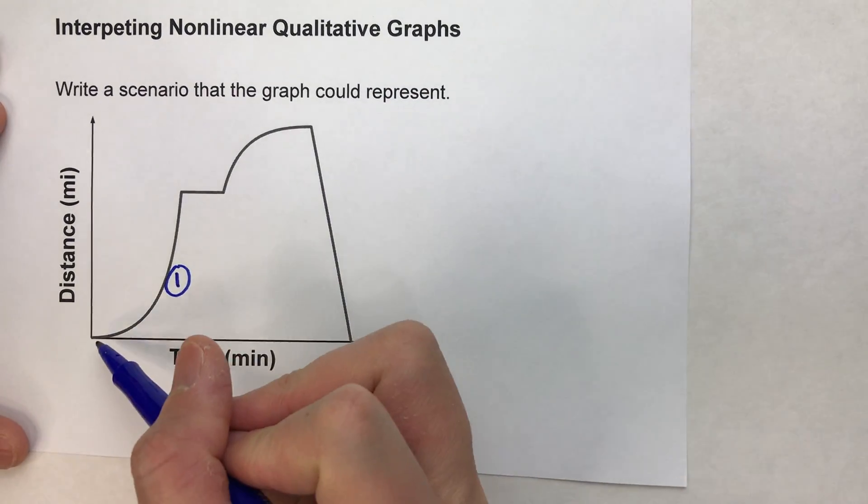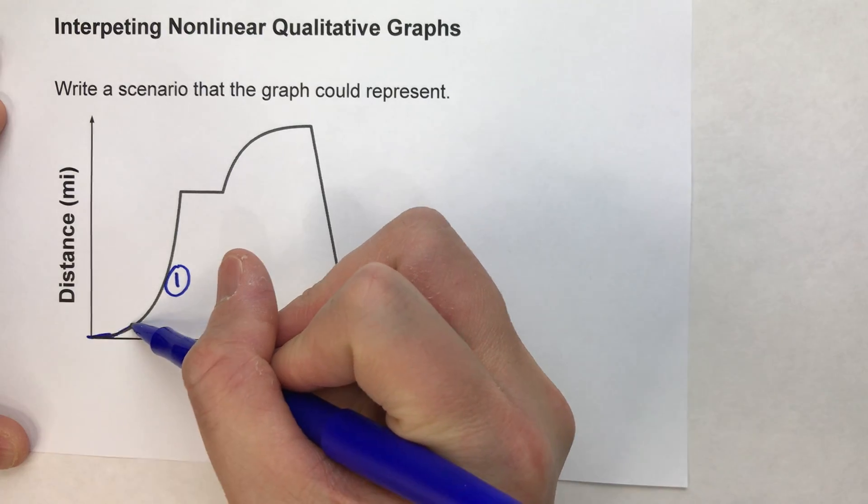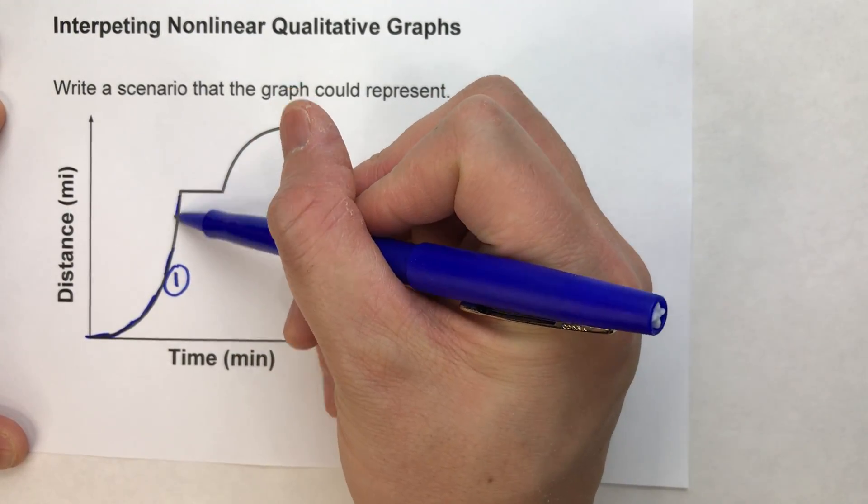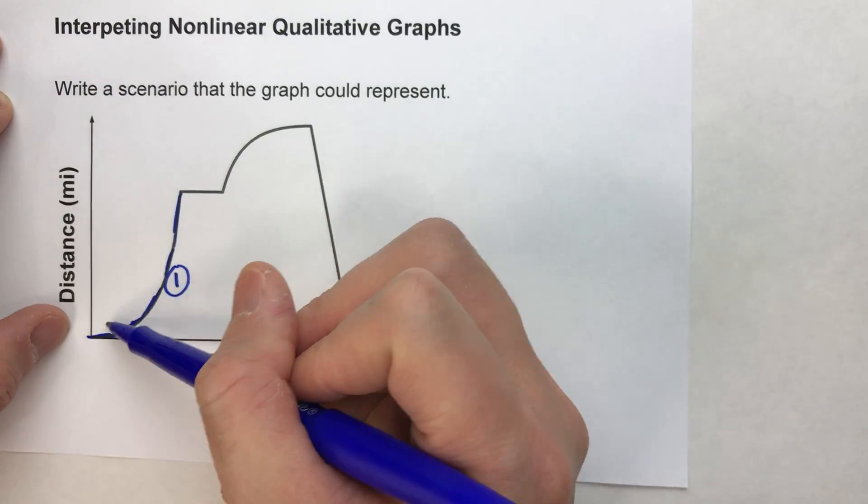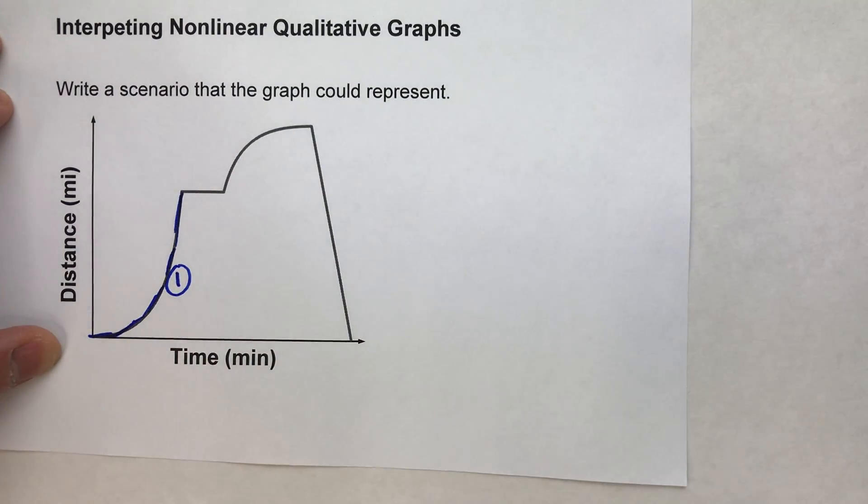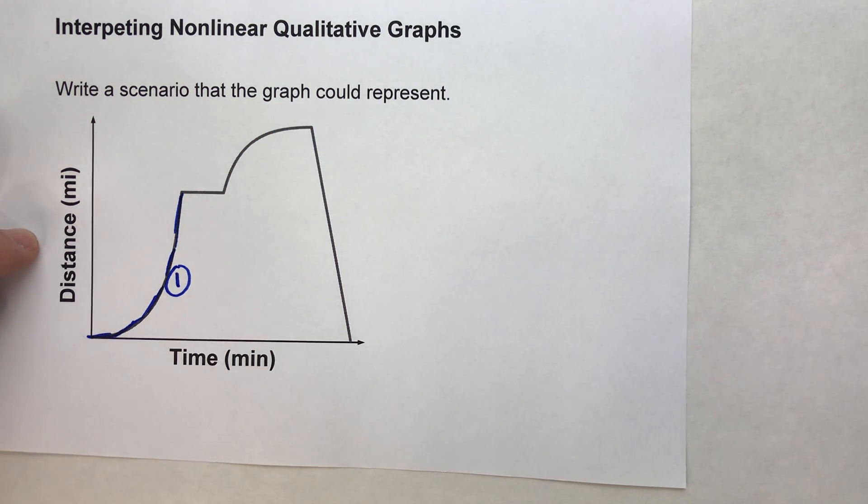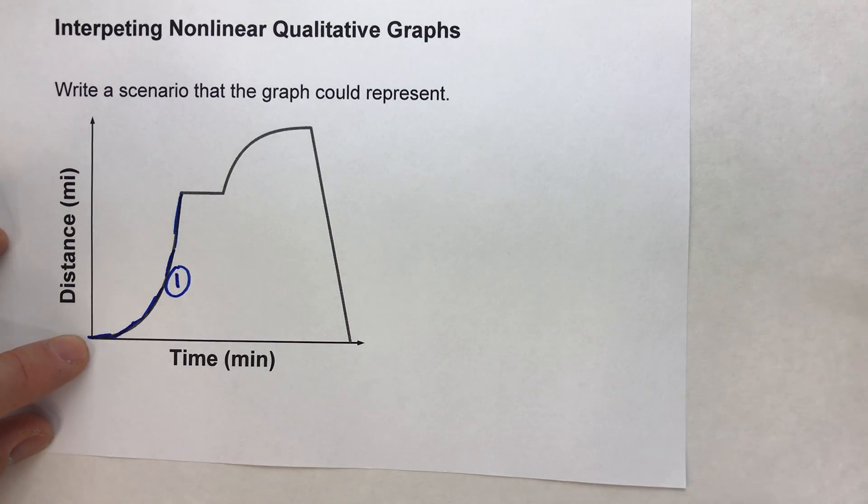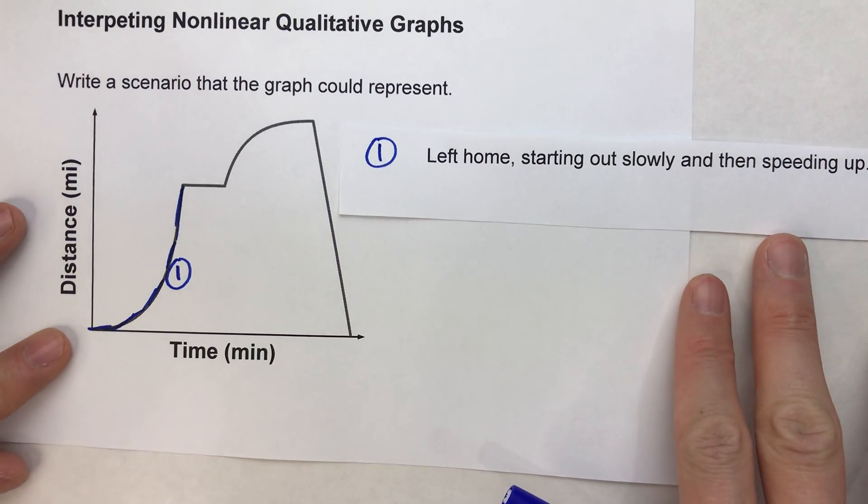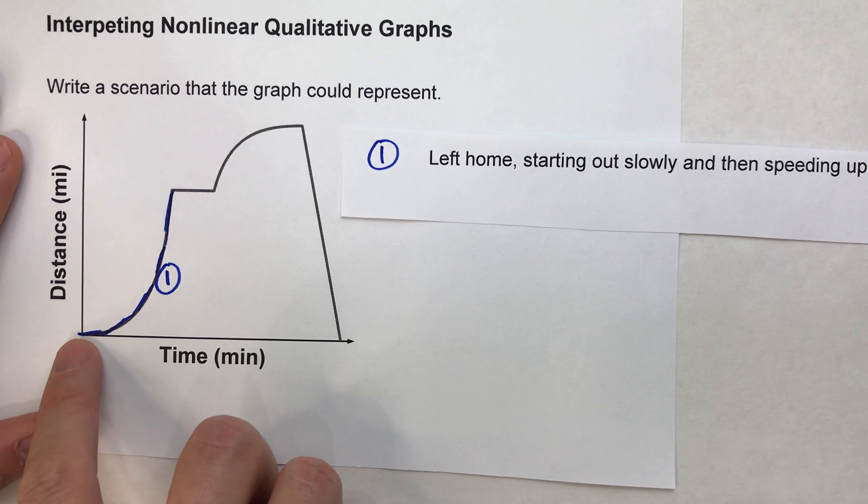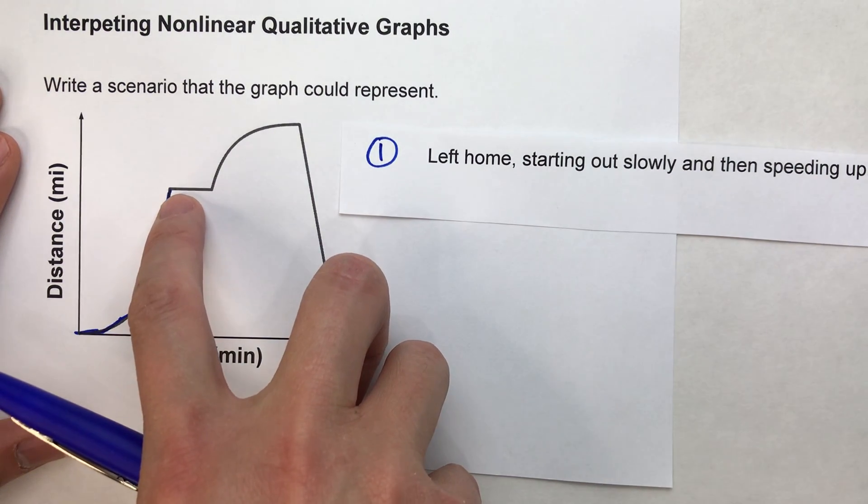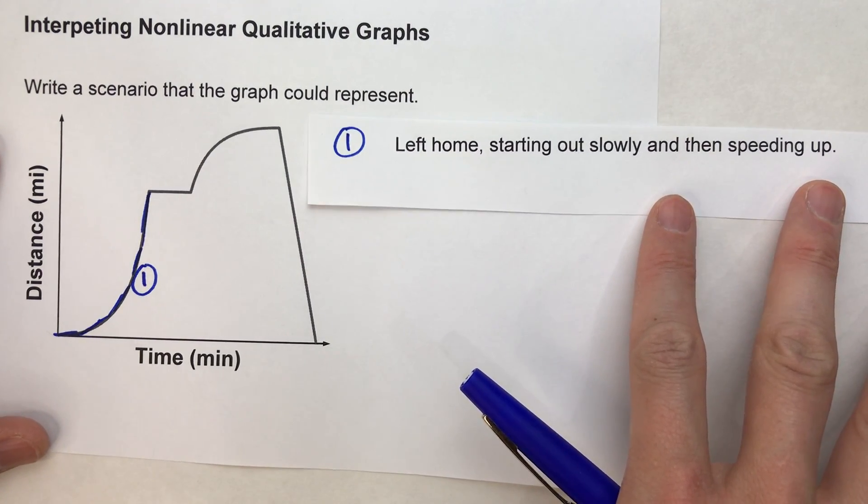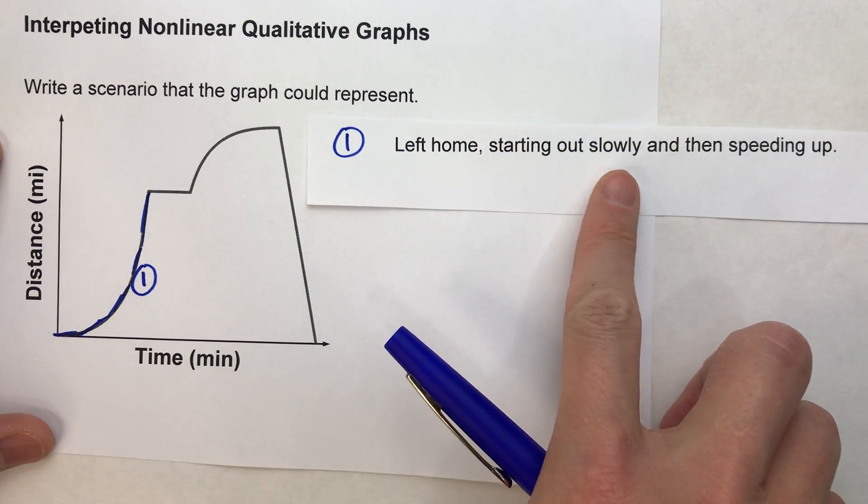So let's look at this first interval. Notice in this first interval, it starts out kind of flat. Then it gets steeper and steeper and steeper and steeper. So this is speeding up. It's increasing because it's going up and it's speeding up. So maybe if we're going to make this scenario, maybe we're leaving home and going for a jog. In this case right here, we left home because we started at zero. We left home, but we started slow. And then we started going faster and faster and faster. So we could say something like, we left home, we started out slowly and then started speeding up.